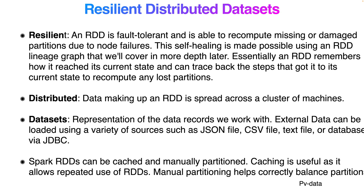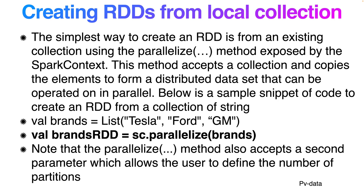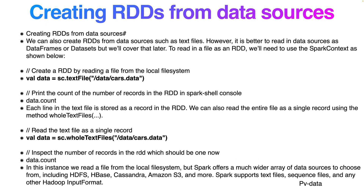Spark RDDs can be cached and manually partitioned. Caching allows reuse of the RDD, while manual partitioning helps correctly balance partitions. The simplest way to create an RDD is from an existing collection using the `parallelize` method, exposed by the SparkContext. For example: define a list like `[Tesla, Ford, GM]`, then call `sc.parallelize(list)` to create the RDD. You can also pass the degree of parallelism as a parameter.